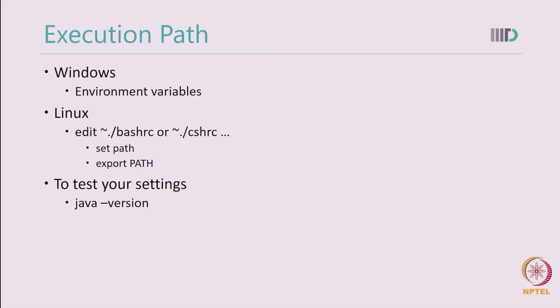Once you have installed Java, run the 'java -version' command and verify that your system can recognize where Java is installed. If it displays the latest SDK that you have installed, then you have correctly installed Java. If it does not, then try to check your installation. There are several websites available that tell you how to install Java, including the Oracle website, which currently owns Java.